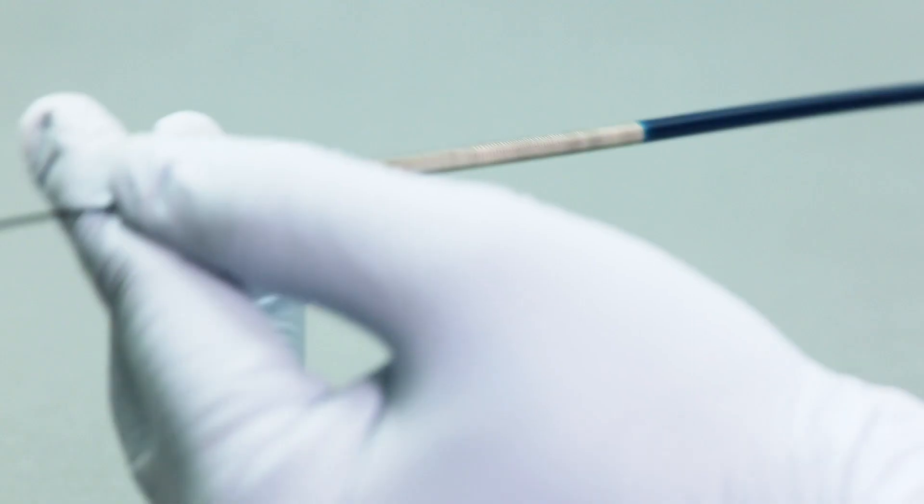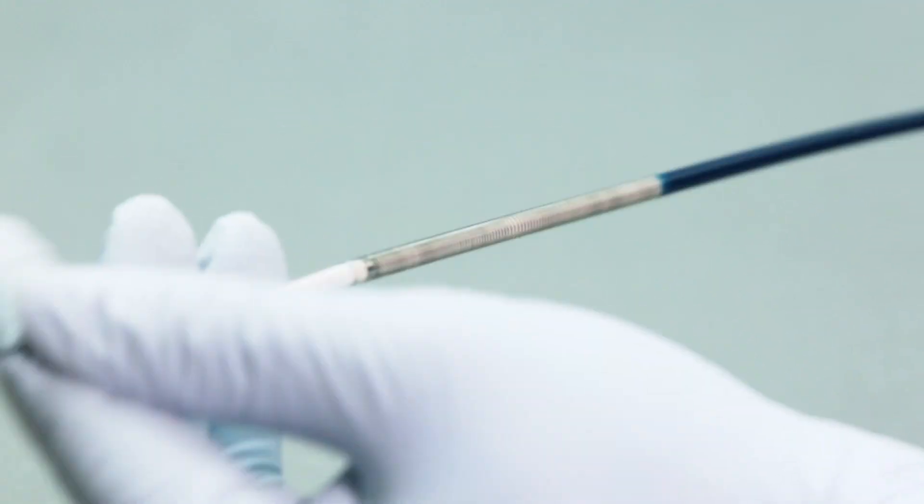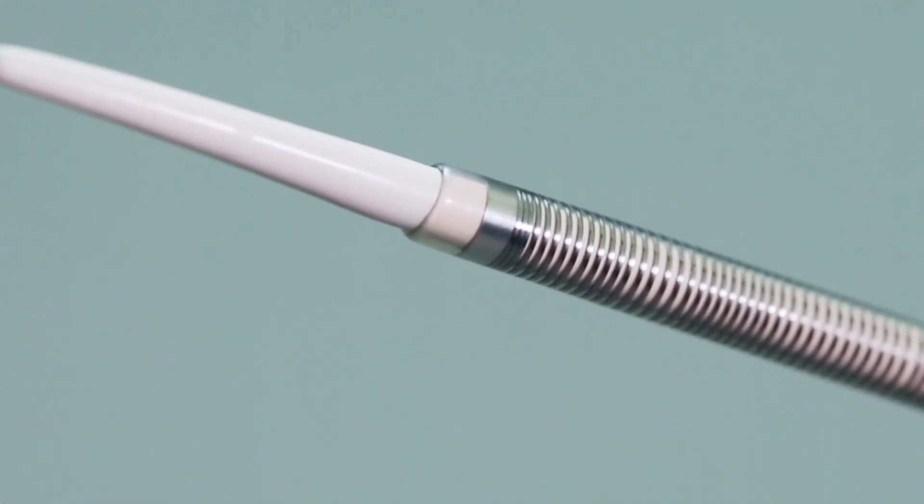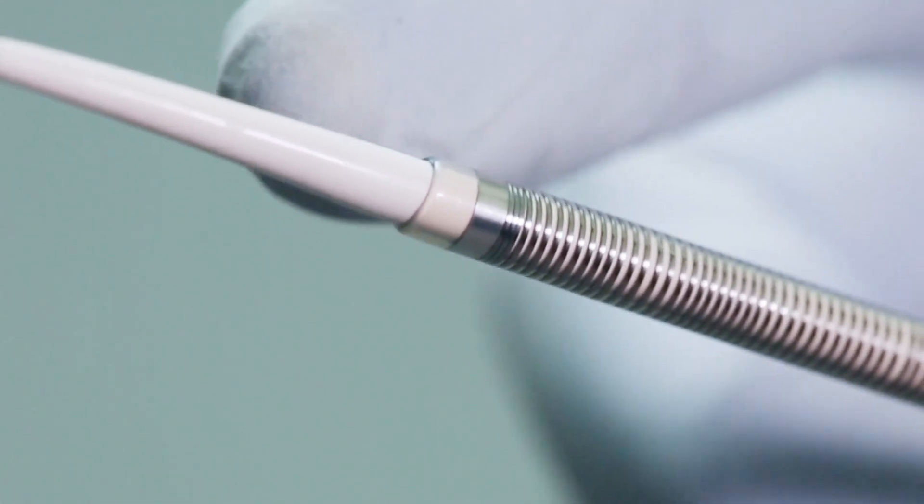The platinum marker band aids identification of the sheath's tip under fluoroscopic guidance. A contrast medium can be injected if required.